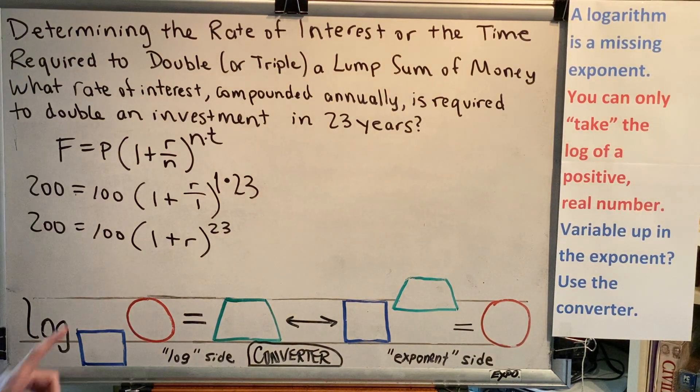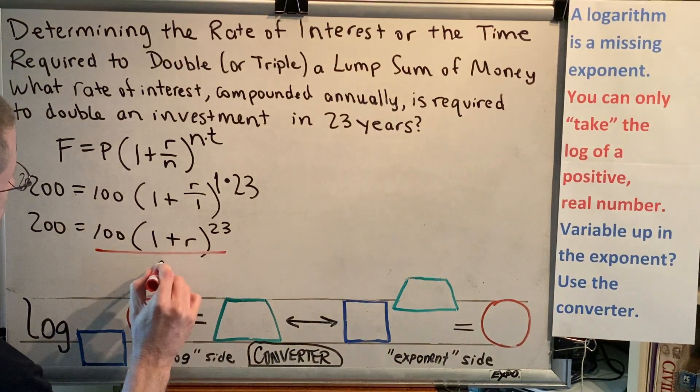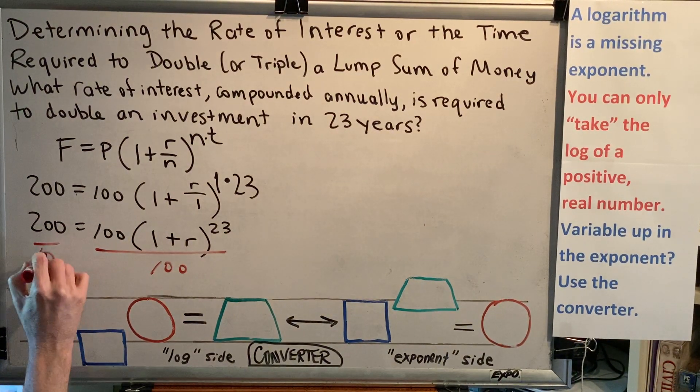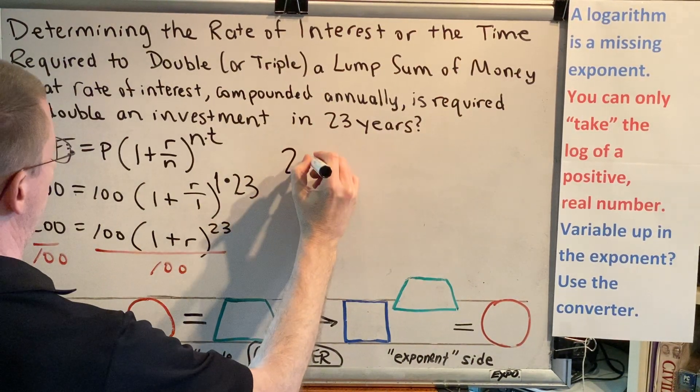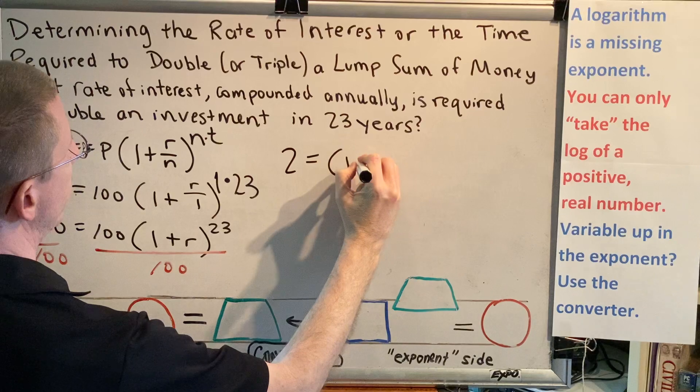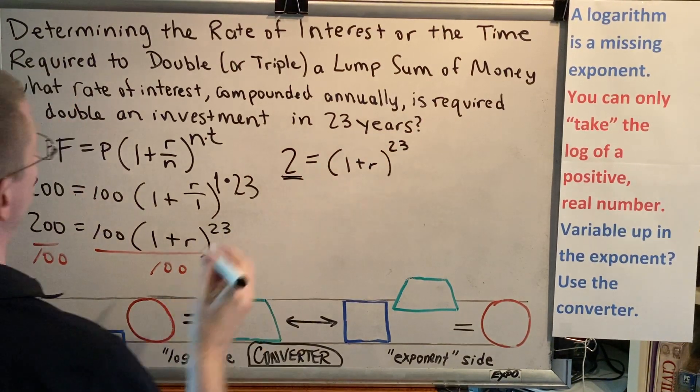But before we can do that, we have to get rid of this 100, just like we did in previous videos. So divide by 100 on both sides, and now we're going to have 2 equals 1 plus R to the 23rd power.